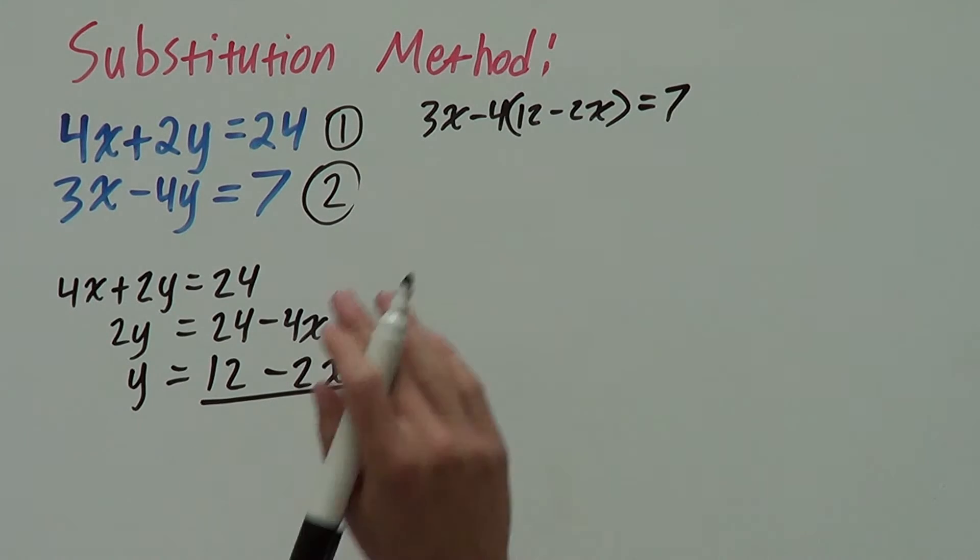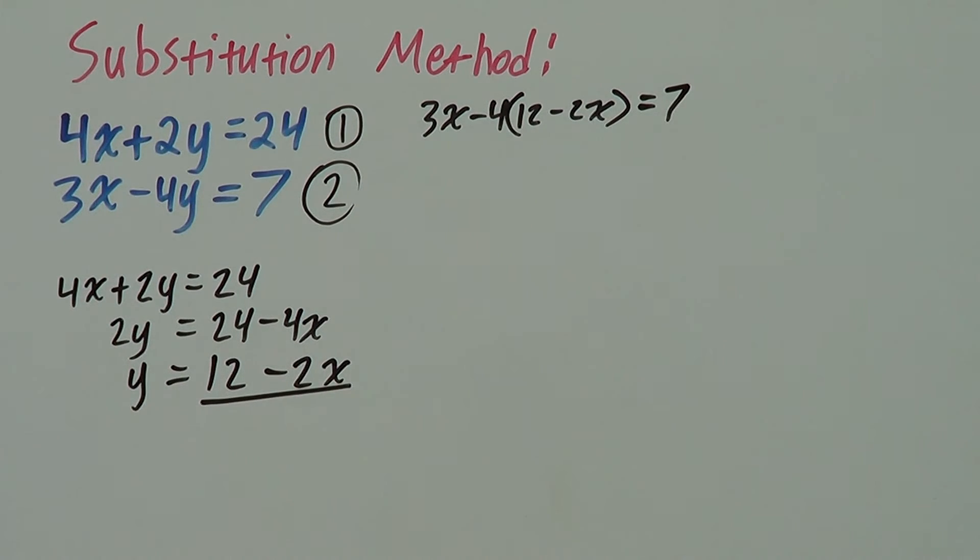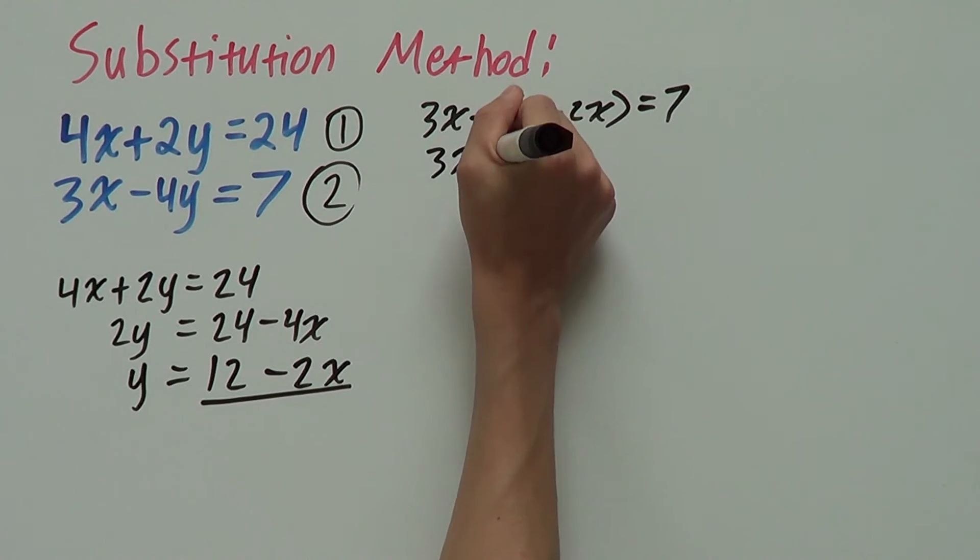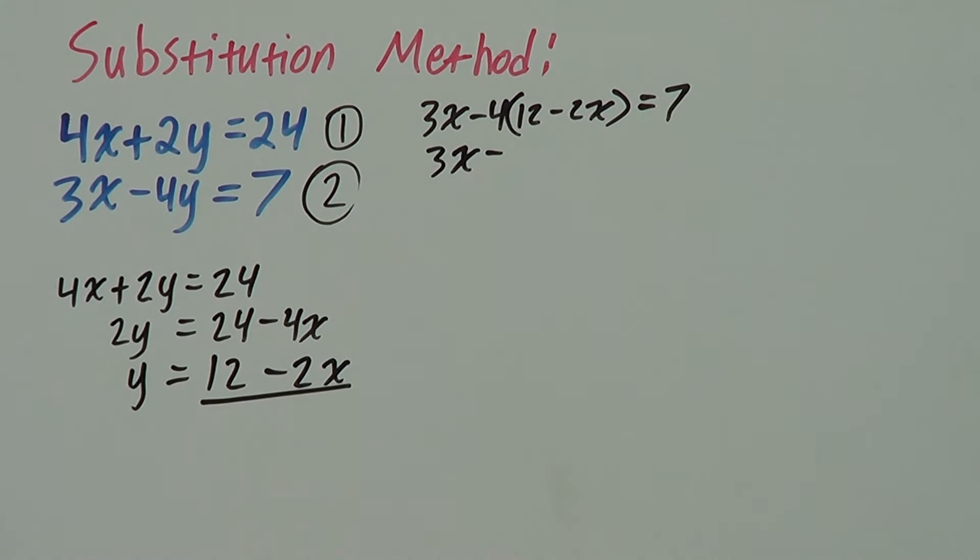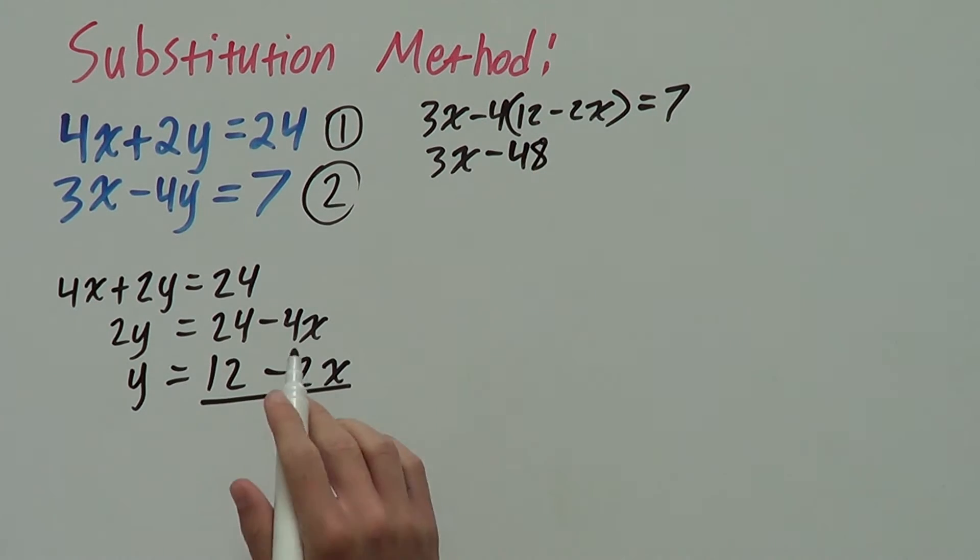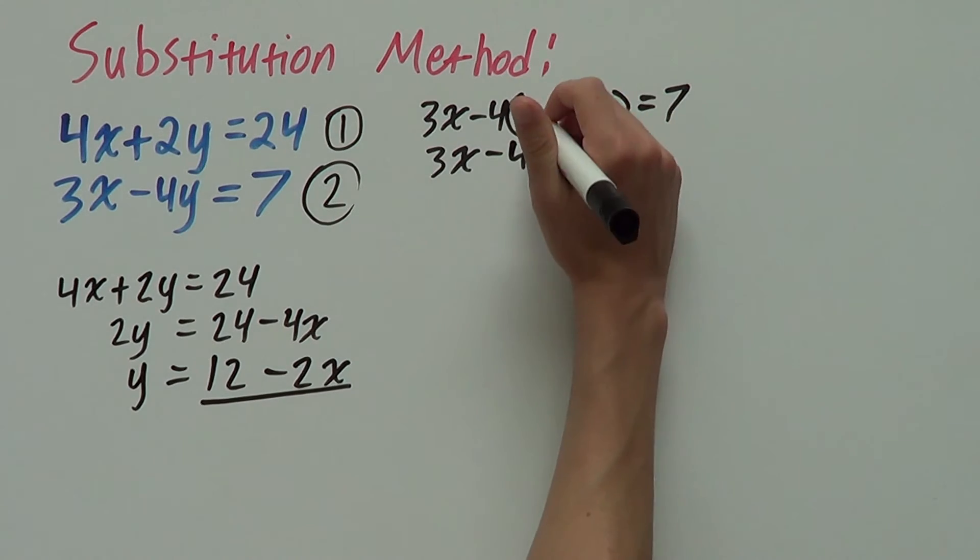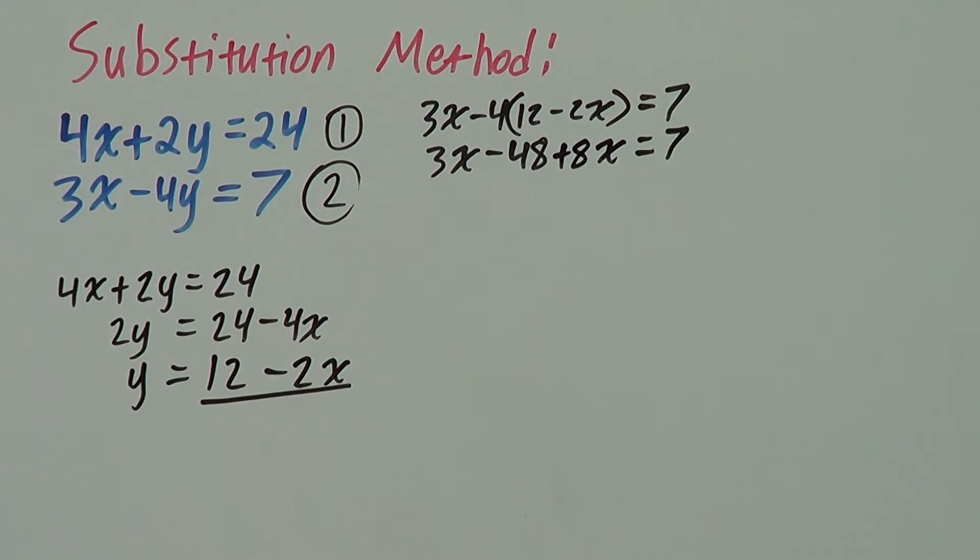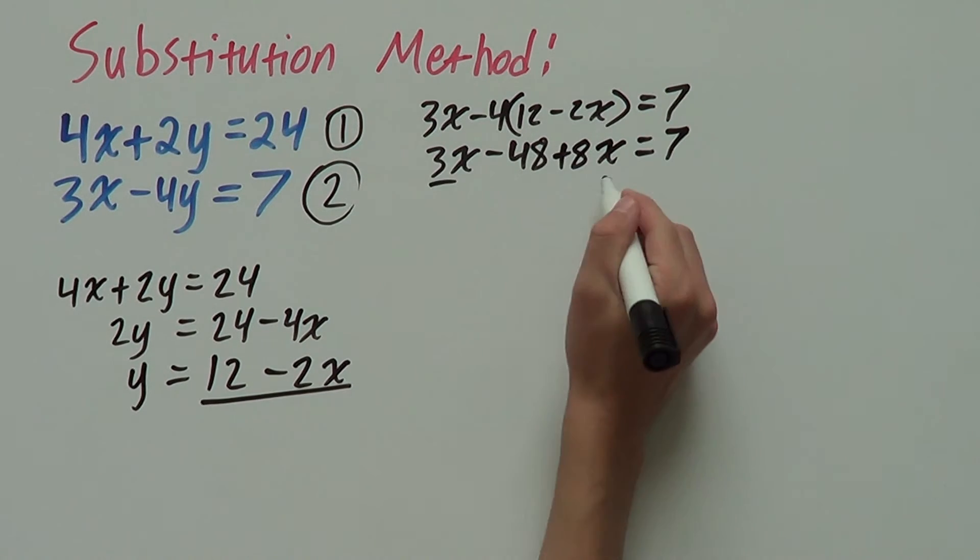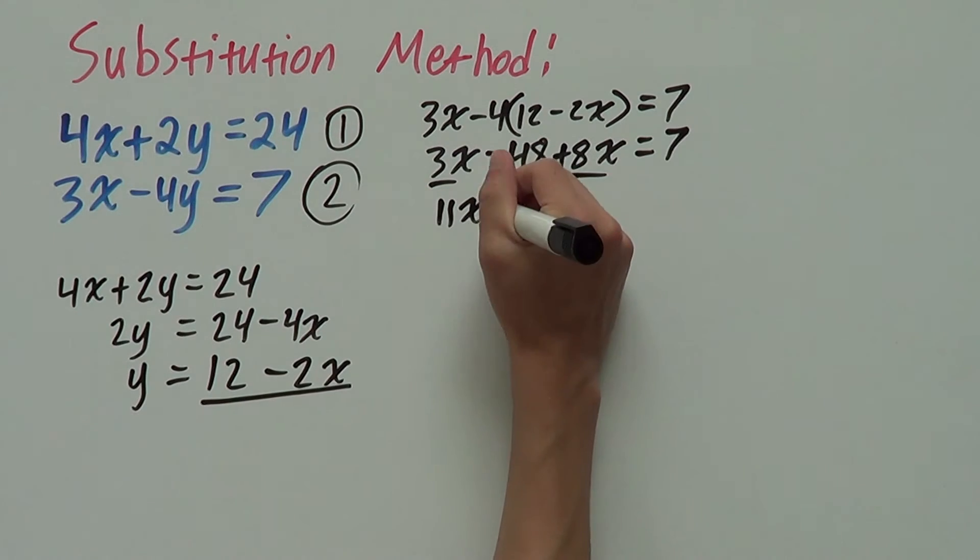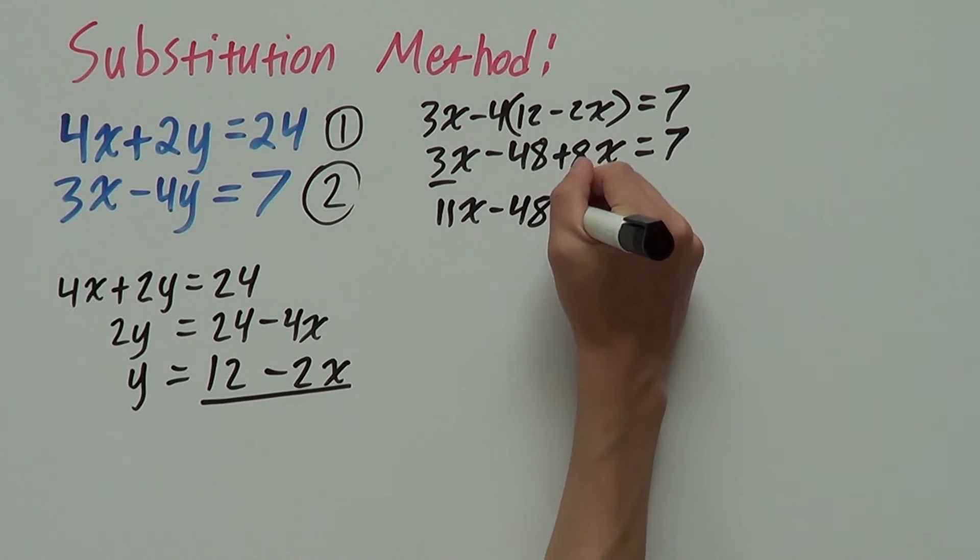So, we can solve for x now and find our value for x. So, we have 3x minus so negative 4 times 12 is negative 48. Negative 4 times negative 2x that's plus 8x equals 7. Now, we can combine our like terms to give us 11x minus 48 equals 7.